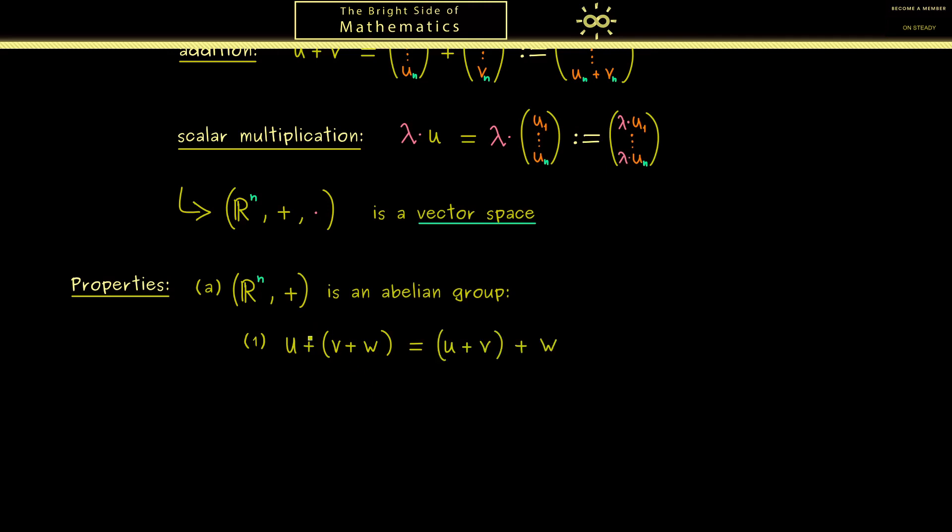More concretely, this means when we have three vectors and two additions involved, we can set the parentheses as we want. So we don't change the overall order of the vectors u, v, w, but we change which addition is first solved. And now if this is the same no matter which vectors we choose, we say the addition is associative.